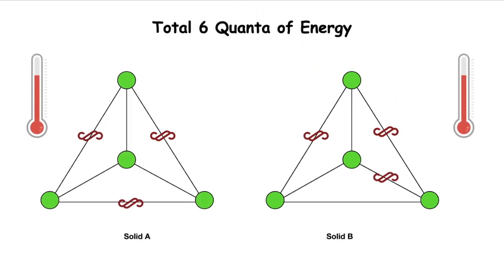Let's say I have total six quanta of energy distributed between two solids A and B equally: three quanta in solid A and three in solid B. In that case both will have approximately similar temperature because higher the energy, higher will be the temperature of the solid.